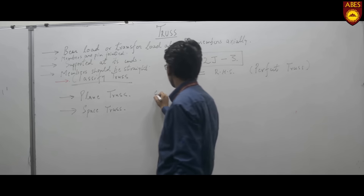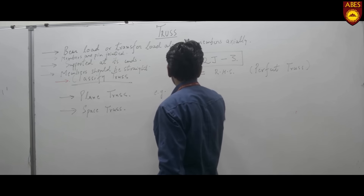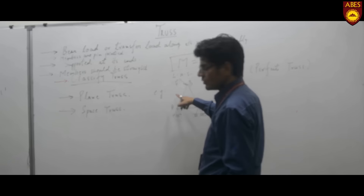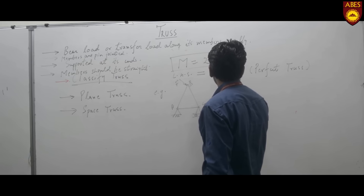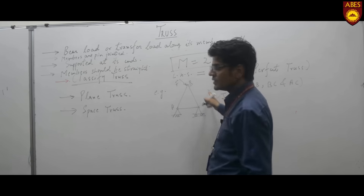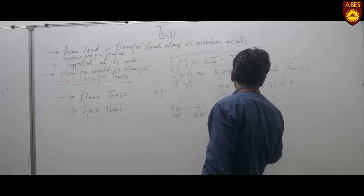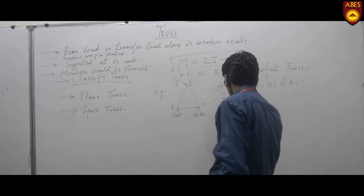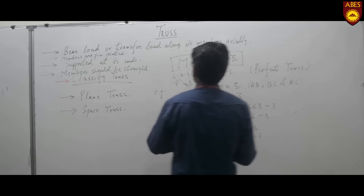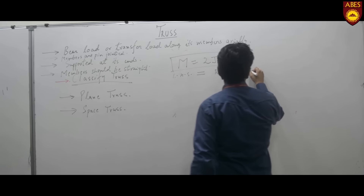For example, recalling the triangle truss where on application of loading the truss will not get deformed: here members are AB, BC, and CA — so m equals 3. Joints are a, b, and c — so j equals 3. Putting these values in the equation: m = 3 and 2j minus 3 = 2×3 minus 3 = 6 minus 3 = 3. So 3 equals 3, meaning left-hand side equals right-hand side, which proves the truss is a perfect truss.